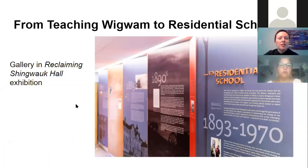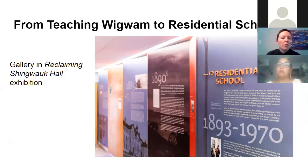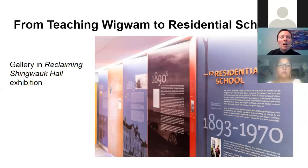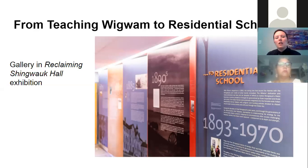The final gallery from the first phase of the Reclaiming Shingwauk Hall exhibition is called From Teaching Wigwam to Residential School. This is probably the most ambitious gallery in this space — it goes from talking about Chief Shingwauk and his vision for teaching wigwams and cross-cultural education, to talking about the establishment of colonial systems in this region, missionary work, and how the early Shingwauk site was established and how it changed over the years, all the way up to 1970 — covering a huge amount of history in a relatively small space.